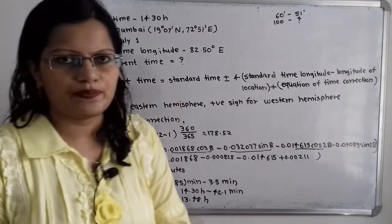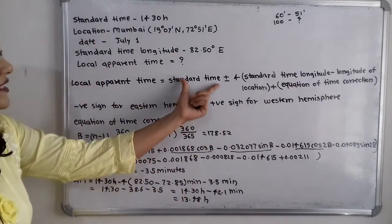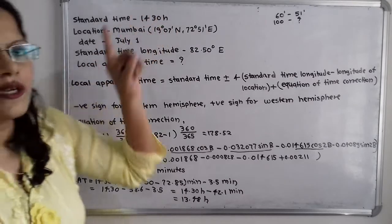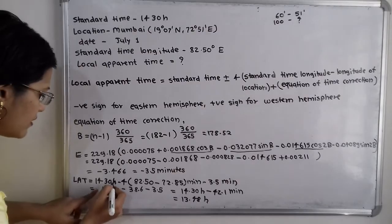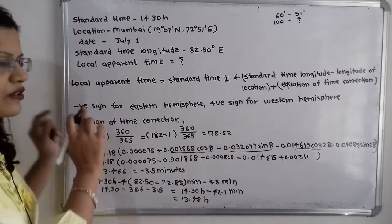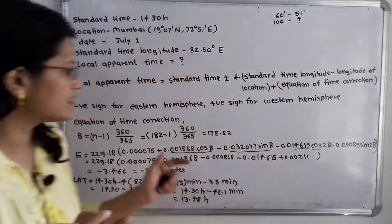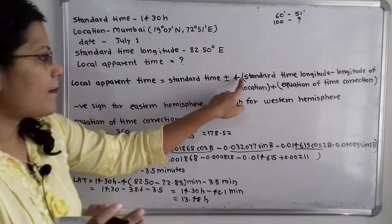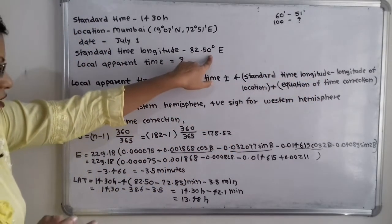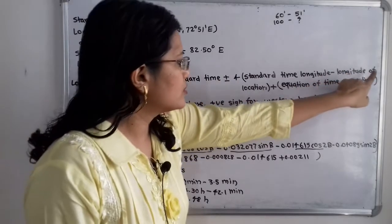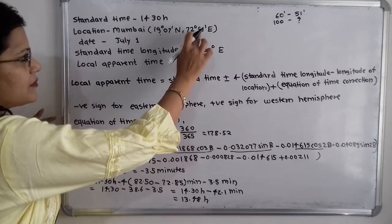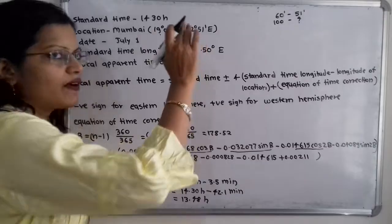Now we calculate local apparent time. The standard time is 14:30 hours, i.e., 14 hours 30 minutes. Since Mumbai is in the eastern hemisphere, we use the minus sign: LAT = 14:30 hours − 4 × (82.50 − longitude of location). The standard time longitude is 82.50 degree east, and the location longitude is 72 degree 51 minute east.